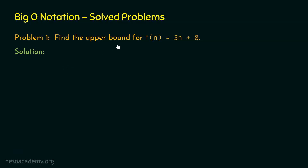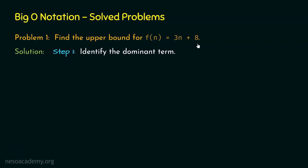In order to solve this problem, I have divided the solution into multiple steps. Step number 1 is to identify the dominant term. The dominant term of an expression is the term which contributes most to the value of the expression as n increases. In this expression, 3n is obviously the dominant term. 8 is just a constant — as n increases, 8 remains 8, but 3n increases with n. So clearly, 3n is the dominant term.